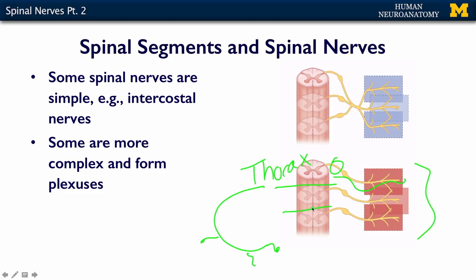There are areas of the body where the spinal nerves exit and come together to form a great big net, but then once they hit the surface, they distribute evenly just like the simple ones. So some of them are simple, like your intercostal nerves, and some are more complex and they form plexuses.